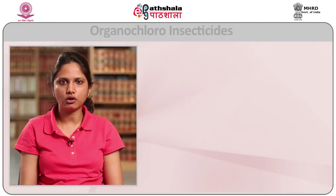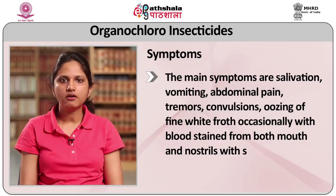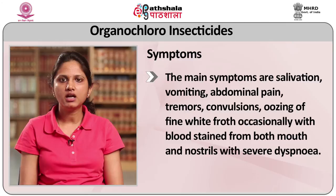How do organochloro compounds affect the biological system? These affect the sodium conductance across the neuronal membrane, and hence affect the central nervous system and neurotransmitters. Toxic effects rapidly follow after ingestion, inhalation or skin absorption. The main symptoms are salivation, vomiting, abdominal pain, tremors, convulsions, and oozing of fine white froth occasionally with blood stains from both mouth and nostril with severe dyspnea. Gradually the convulsions become severe and continuous, followed by coma which may terminate in respiratory failure and death. Diarrhea is not a constant feature, but in some cases convulsions herald the onset of symptoms. The fatal dose is about 5-6 grams and the fatal period is one hour to several hours.